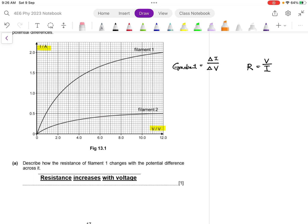you can see that there is a lot of similarity between these two. So if you combine these together, you can see that the gradient is actually representing the reciprocal of resistance.